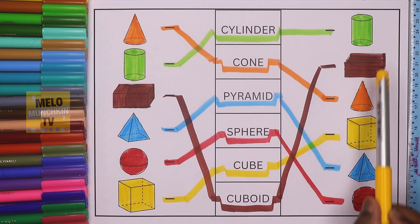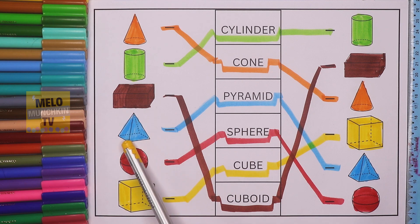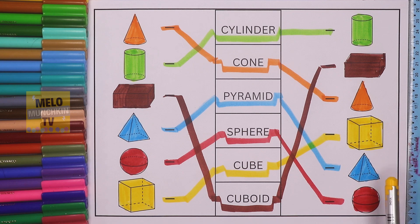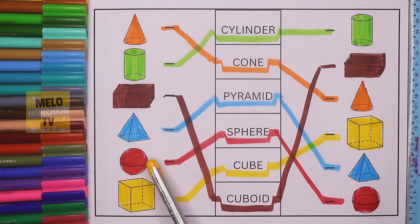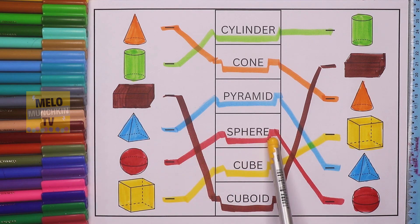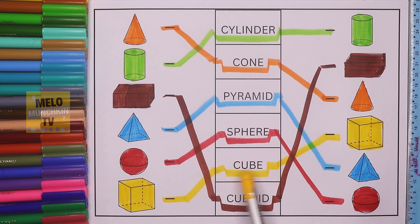The fourth one is pyramid — as you can see this is the shape of pyramid, that is in blue color, and here is also the pyramid. Next it is sphere — it is in red color, sphere, and this is in red color, so both are sphere. The last one, the sixth one, is cube — the spelling is C, U, B, E — cube.